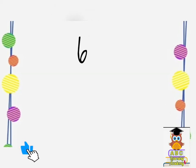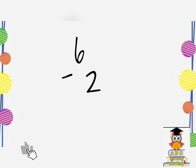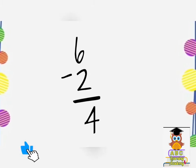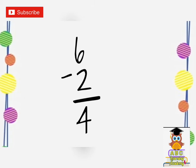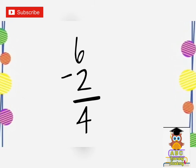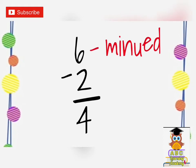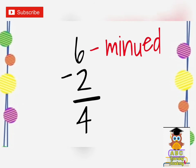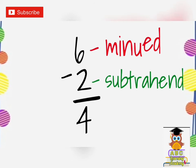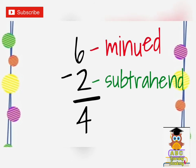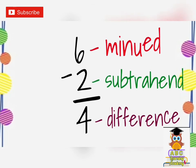Let's go back again to our example. This is a vertical subtraction sentence: 6 minus 2 equals 4. So we're going to find the minuend — it is the first and the largest number. The minuend here is number 6. Next, we will look for the second number in the subtraction. We call that the subtrahend. Number 2 here is our subtrahend. And the answer, that is number 4, is the difference.